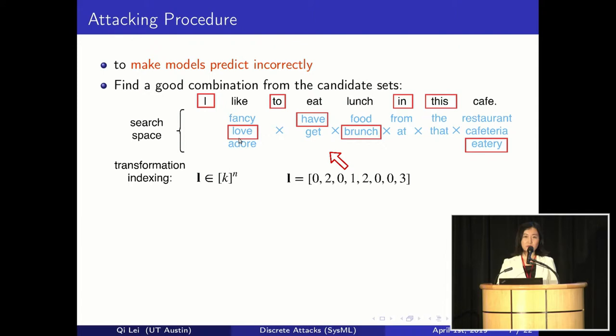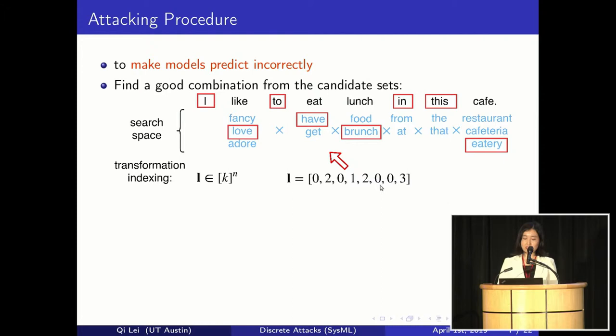Now we want to make the model predict incorrectly — how do we do that? We want to find a combination of replacements. To do that, we give each combination an index to represent it. We use a vector of the same length as the input document. A zero means we keep the first word unchanged, and a one means we replace the fourth word with the first candidate. Each indexing represents a unique transformation.